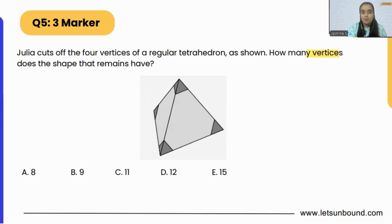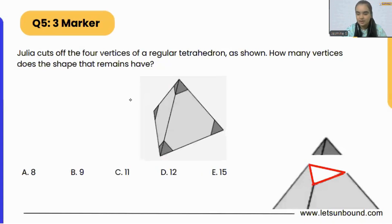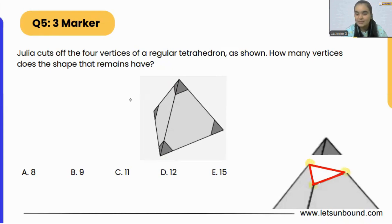Let's zoom in and look at a single vertex. Julia is cutting the vertex from the top like this. If we are cutting from the top vertex, we are going to be left with one, two, and three vertices around it.